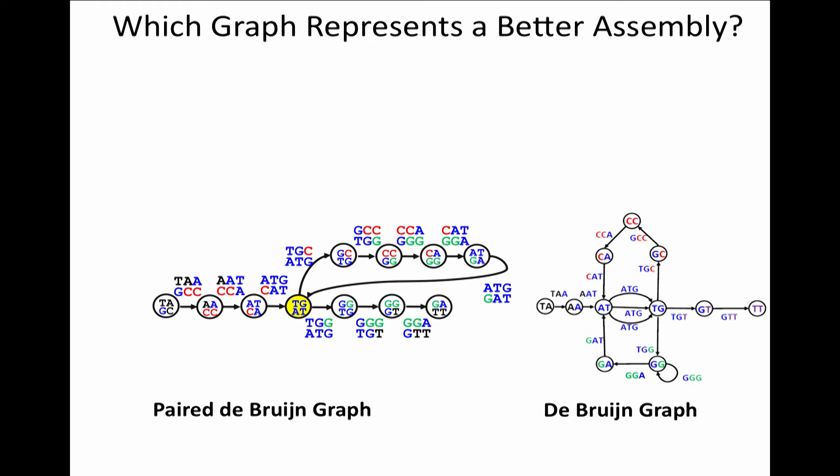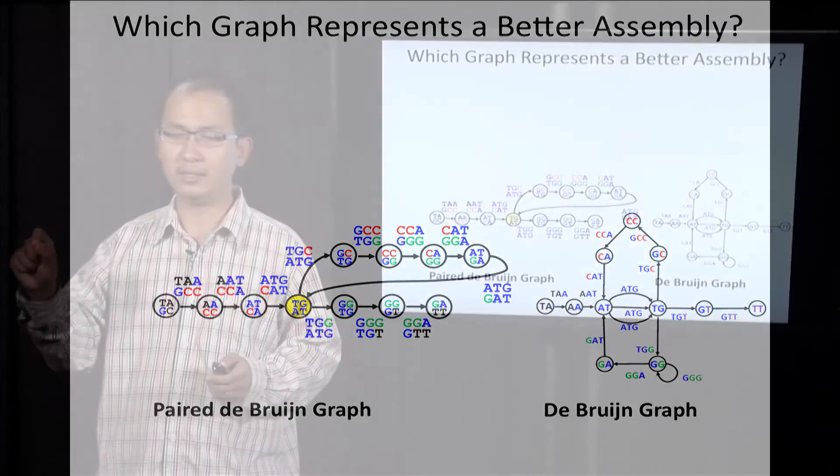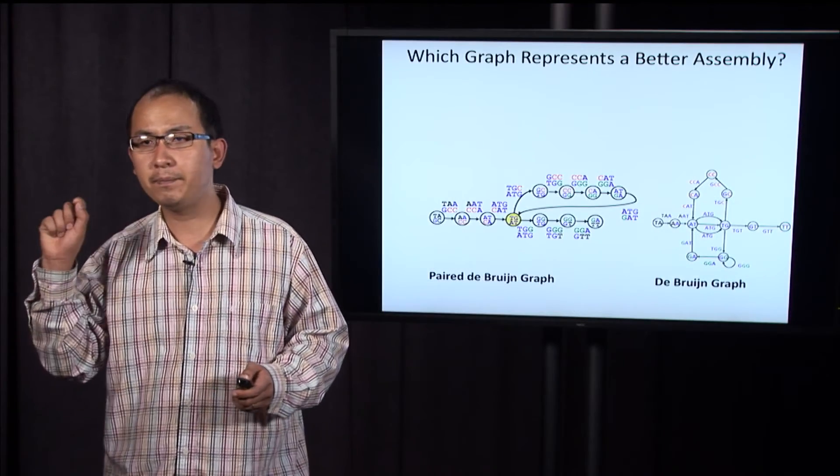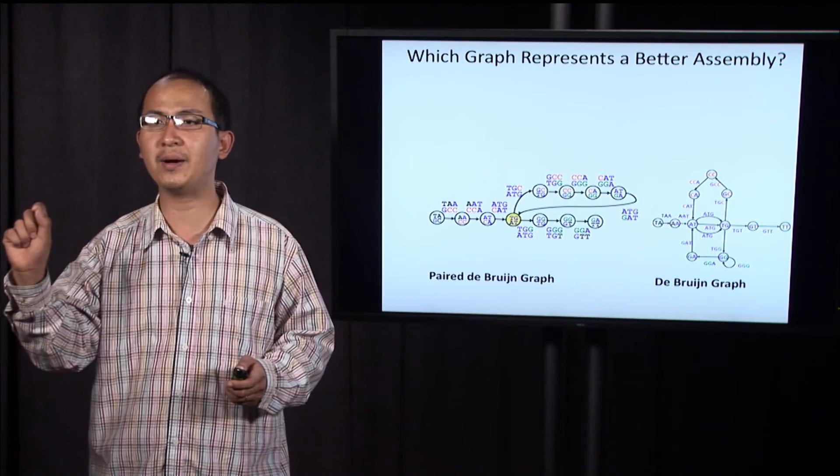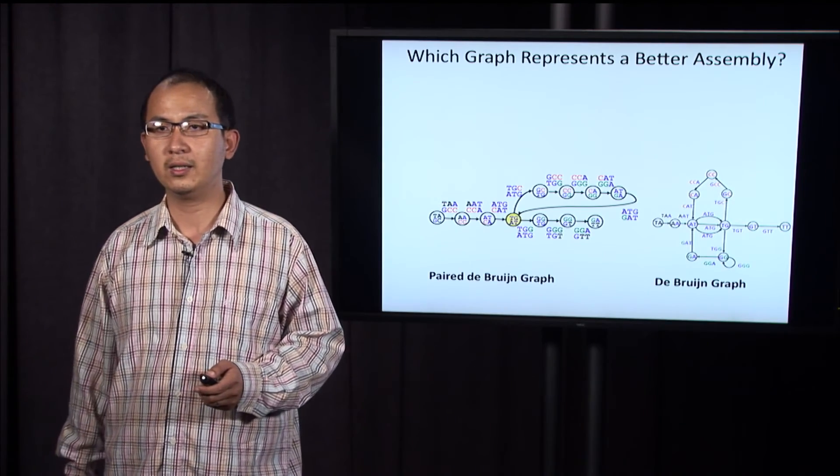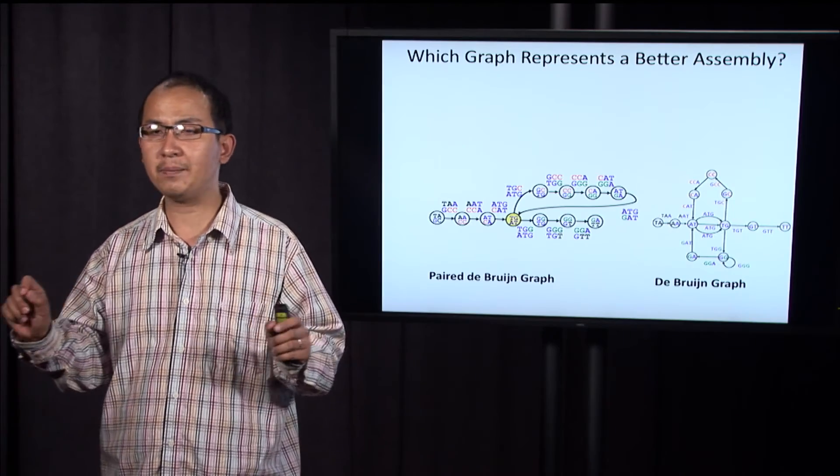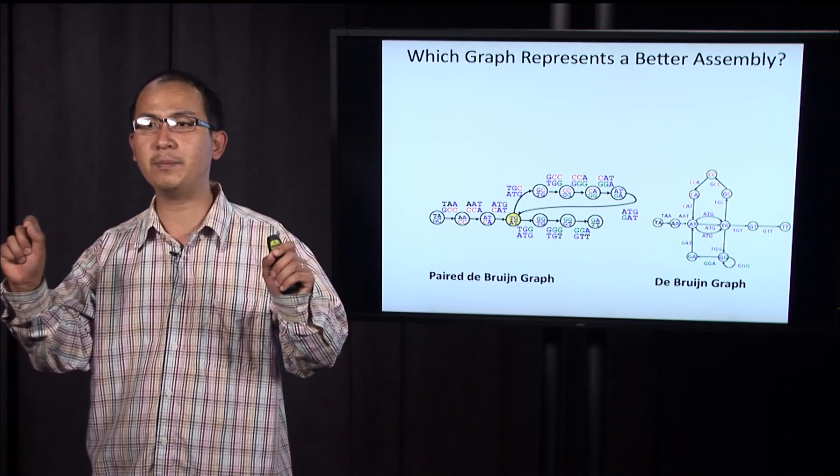But please note that in the paired de Bruijn graph, nodes are labeled by pairs of k minus 1-mers. While in the de Bruijn graph, nodes are labeled by just individual k minus 1-mers.